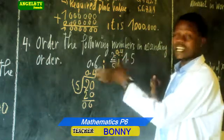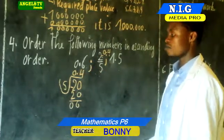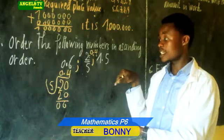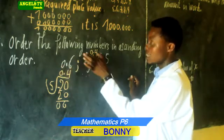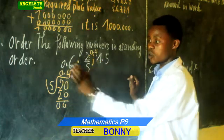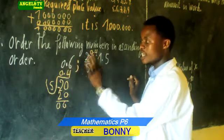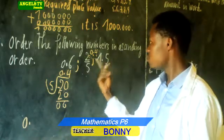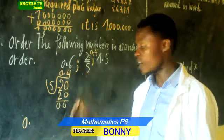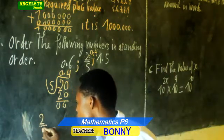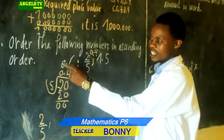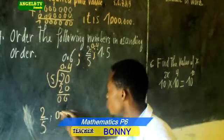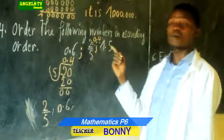After converting, all numbers are decimals: 0.4, 0.6, and 1.5. Now we compare. The whole number parts are 0, 0, and 1. So 1.5 is not the smallest. Comparing 0.6 and 0.4: the decimal parts are 6 and 4, so 0.4 is the smallest. The ascending order is: 0.4, then 0.6, then 1.5.